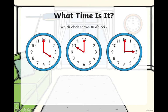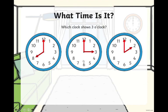Which clock shows 10 o'clock? The minute hand must point at the 12, and the hour hand must point at the 10. If you guessed this clock, you are a star. Which clock now shows 3 o'clock? The minute hand needs to point at the 12, and the hour hand needs to point at the 3. If you've guessed this clock — super!